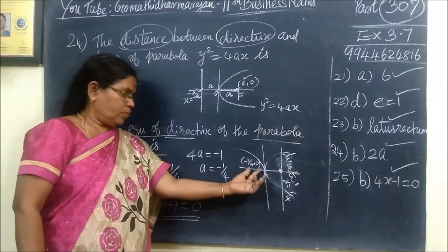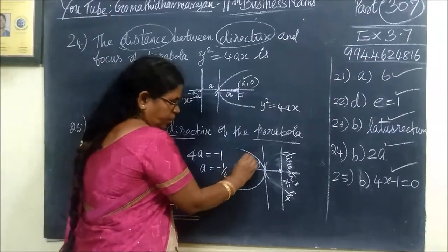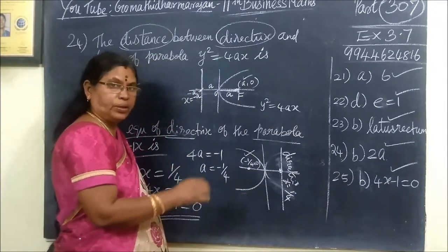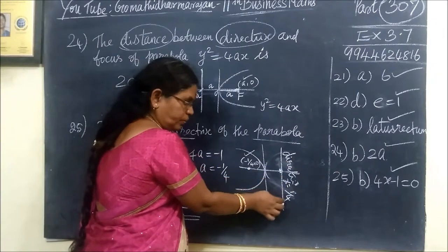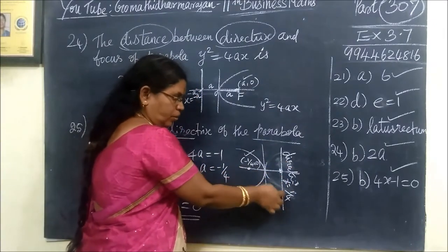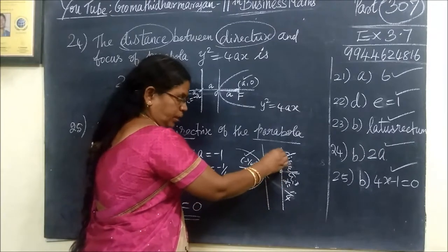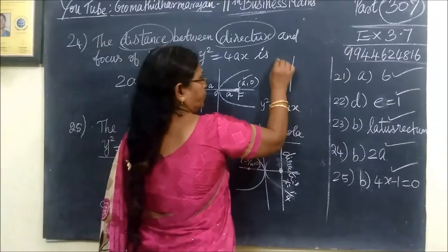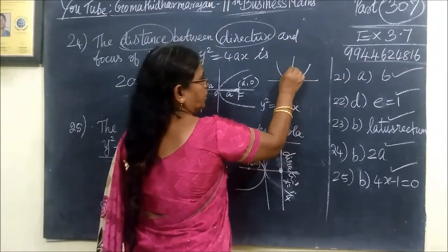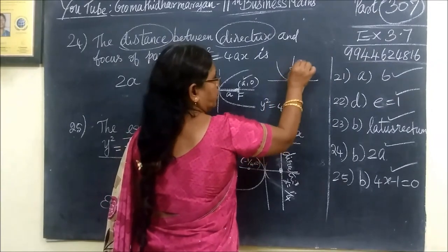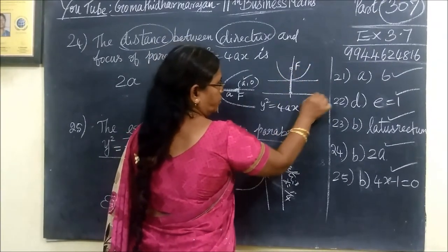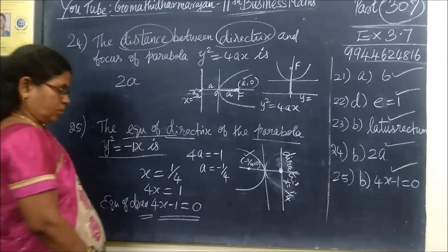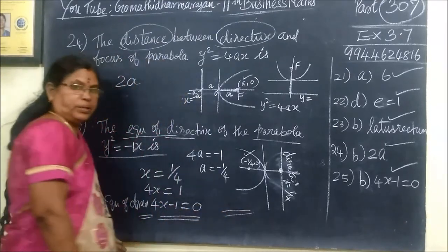To explain again: the focus has an x-coordinate on one side, and the directrix is the line on the opposite side. If x is on the opposite side from the focus, the directrix equation follows from that. Similarly, if y is on the opposite side, then y equals the distance. Hope you understand. Thanks, see you next time.